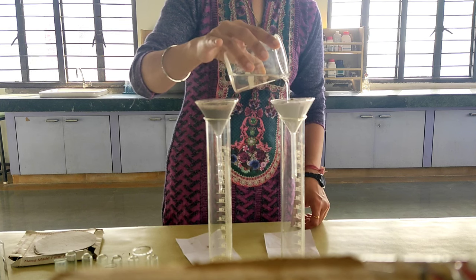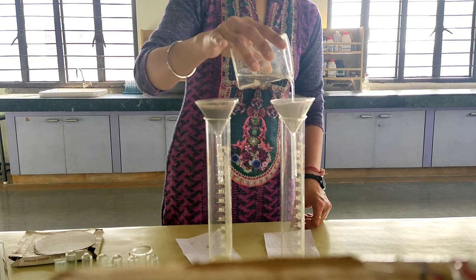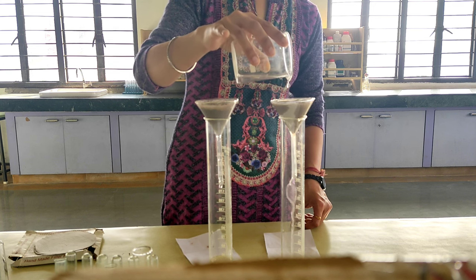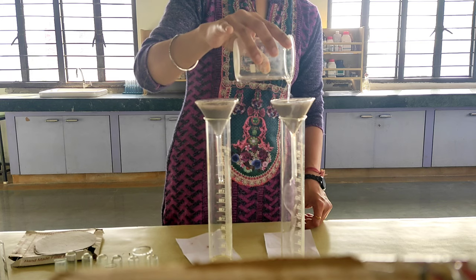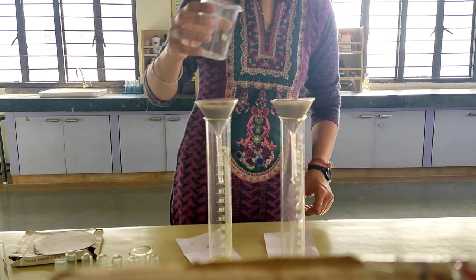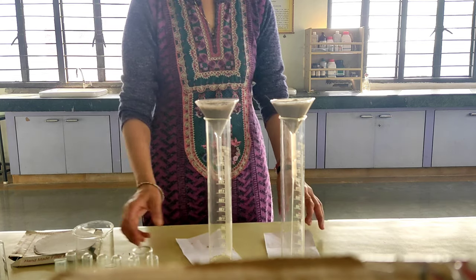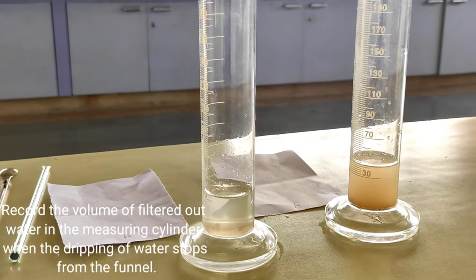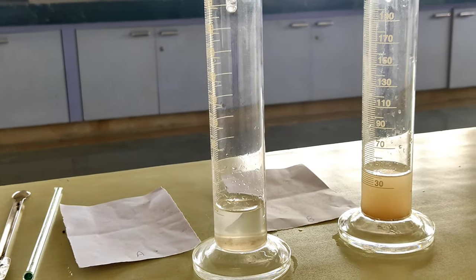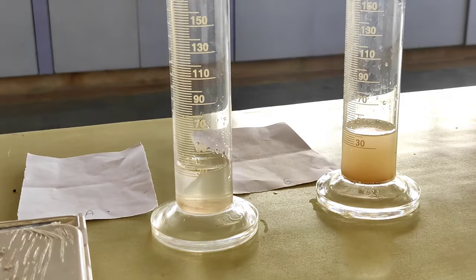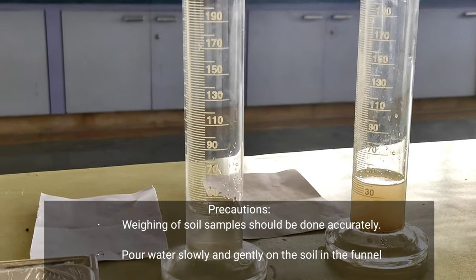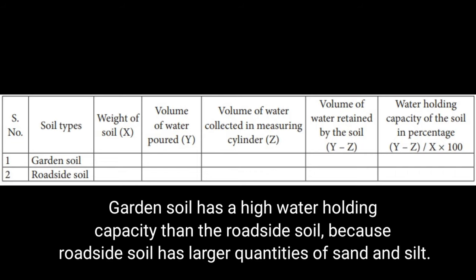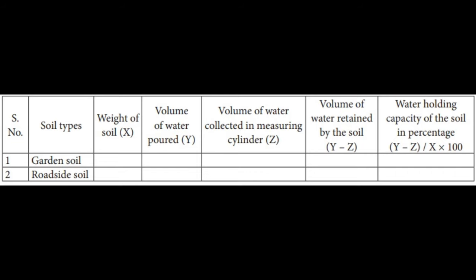When you pour the complete 50 ml water, you have to leave it and wait until the water has fully drained out. After some time you can see that water has stopped coming out from the funnel. We can take the readings now. We will put the three values in our observation table, and finally we can get the water holding capacity of soil samples A and B.